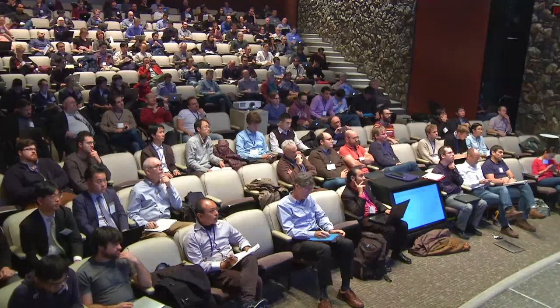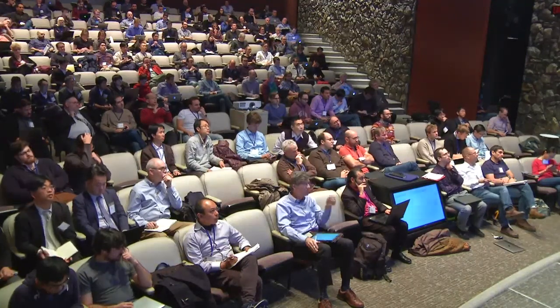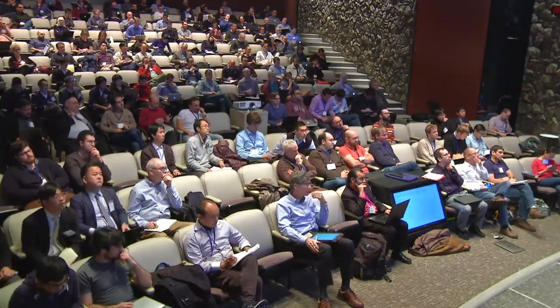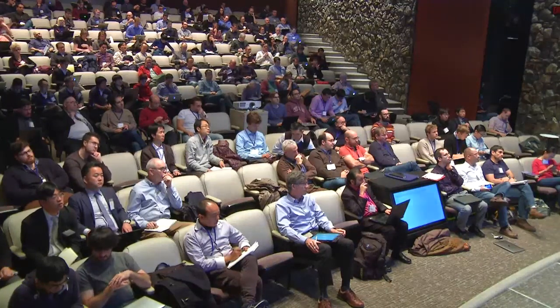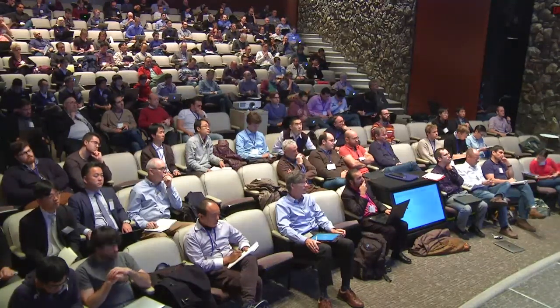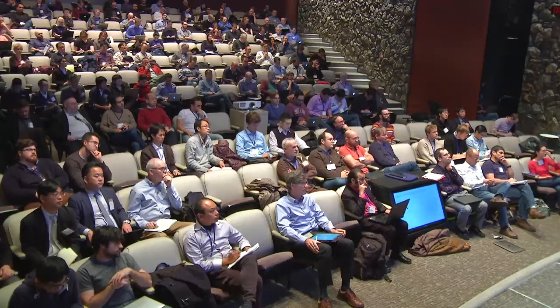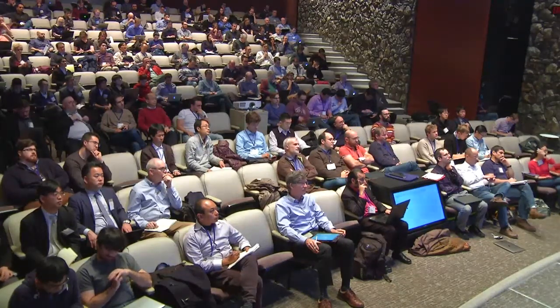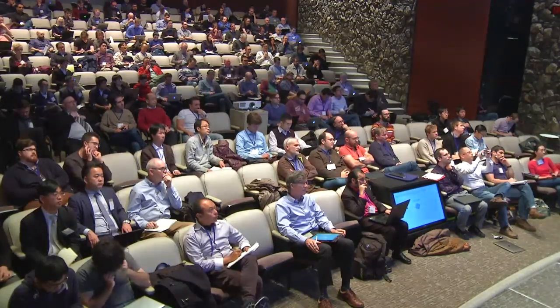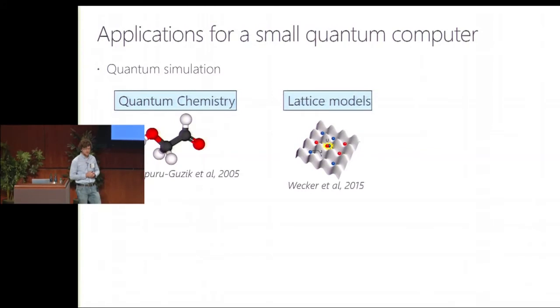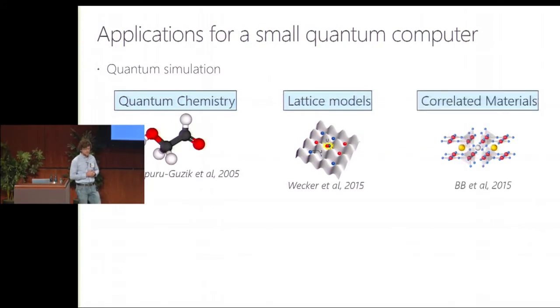This is generally in the context of quantum simulation and the problem that we're all facing: what do we do with a relatively small quantum computer? In the simulation context, there are a lot of different application areas that people have looked at. Quantum chemistry is maybe the original one. The Hubbard model is something that, if you ask a condensed matter physicist, covers many different types of materials. But we were interested in adding another one, which is studying correlated materials.